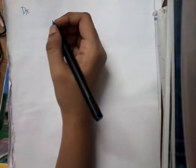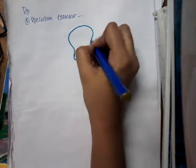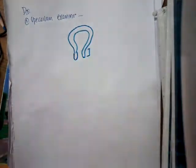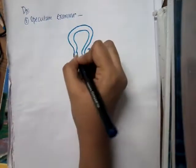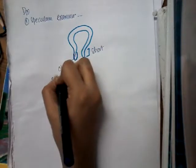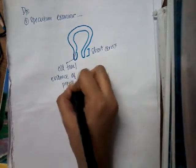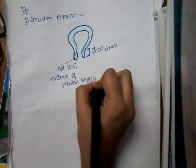What are the diagnostic features and how are you going to diagnose cervical incompetence? Cervical incompetence or cervical insufficiency is diagnosed by, number one, per speculum examination. If you do a per speculum examination, you will see that the cervix is short. Sometimes you may also see old tears or evidence of previous surgery. So these should be seen on per speculum examination.